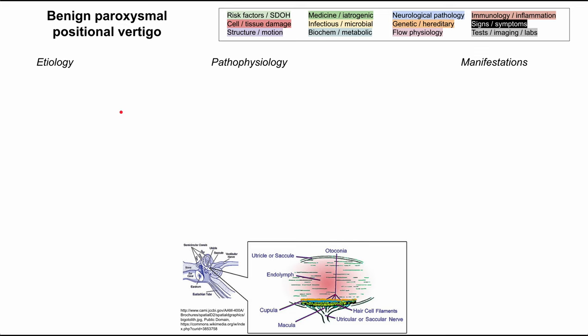Let's go ahead and get started with the pathophysiology. The pathophysiology of BPPV ends with the abnormal stimulation of the vestibular apparatus, which leads to the abnormal stimulation of the vestibulocochlear nerve.